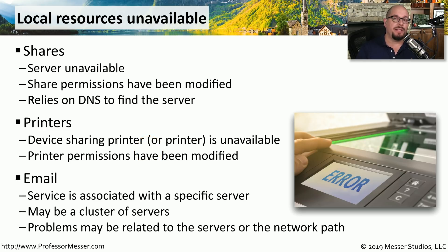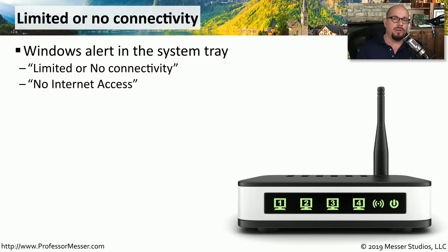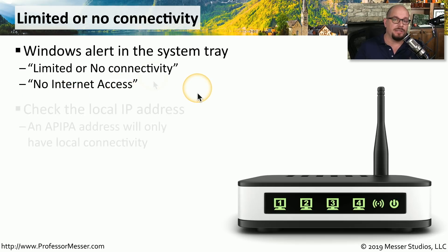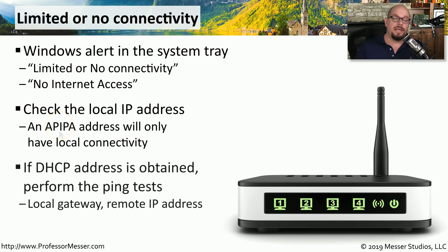If you're not able to access your email, there could be a single server or a cluster of servers having problems, related to the servers themselves or the network path to reach them. If you're having problems accessing different resources on the network, check the system tray in Windows — it may say limited or no connectivity, or no internet access. Check your local IP address to see if it's valid or if you've been assigned an APIPA address. If DHCP is working properly, try pinging your local IP, your default gateway, and then outside your local network to identify where the communication problem is.